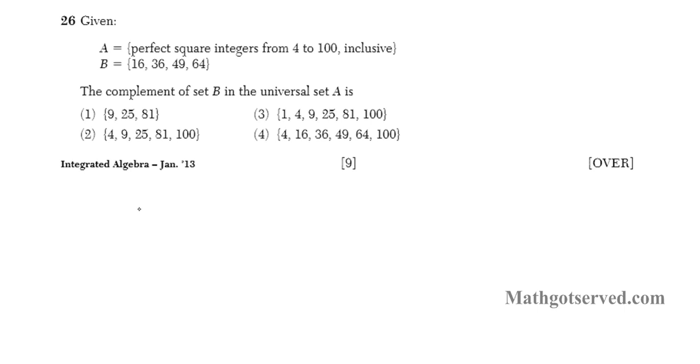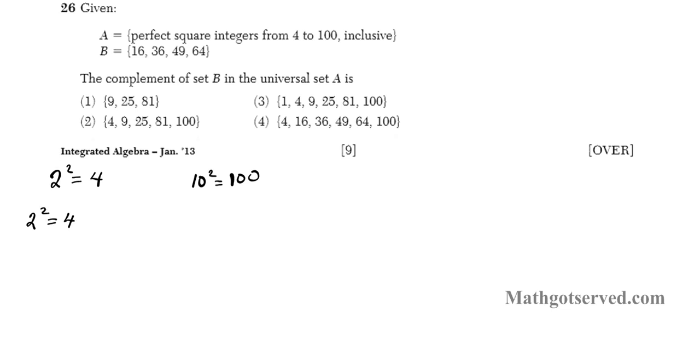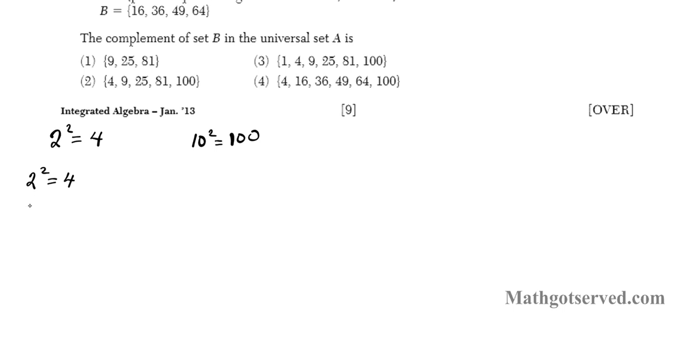So set A is the perfect squares from 4 to 100. We know that 2 squared equals 4, this is the lowest square root that generates the lower bound of this set. And then the upper bound, the number you square to get 100 is 10, right? So 10 squared equals 100. So all the integers squared from 2 to 10 will give us the elements of set A. So we start from 2, 2 squared is 4 which is where you start from. And then to generate the rest we're just going to keep squaring 3, 4, 5, 6, 7, 8, 9, 10.